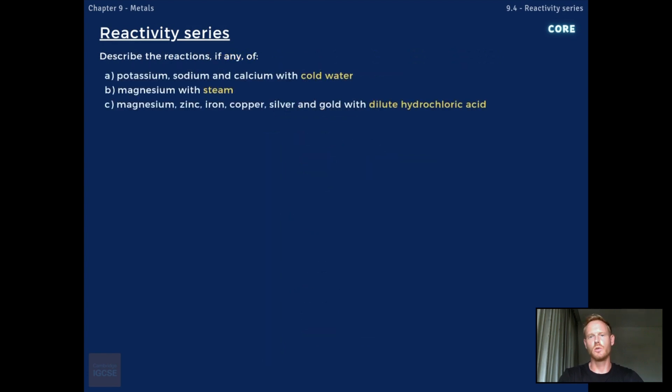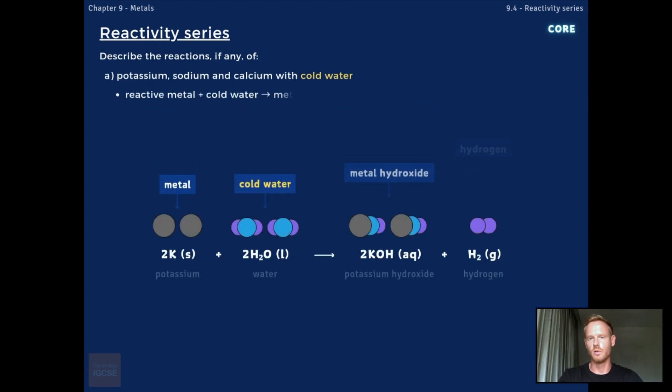The reactivity series can be used to predict how different metals will react with water and dilute hydrochloric acid. Reactive metals react with cold water to produce a metal hydroxide and hydrogen gas. For example, potassium reacts with water to produce potassium hydroxide and hydrogen gas. The reactions occur with decreasing vigour moving down the series.